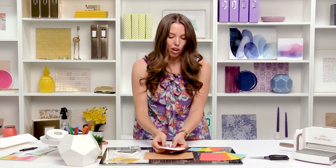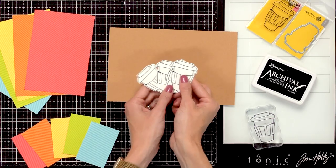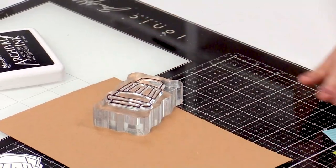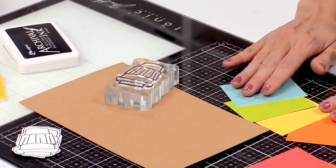So I went ahead and die cut all 5 of the coffee cups out. Now I have to stamp my coffee cup 5 times on craft paper and then 5 times on these colored cardstocks.